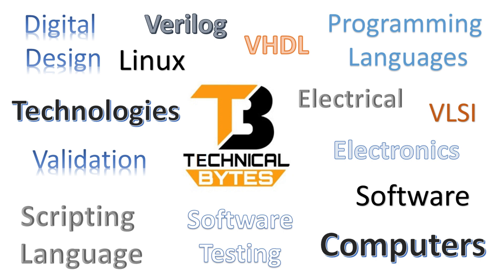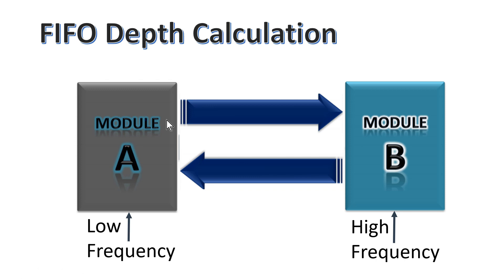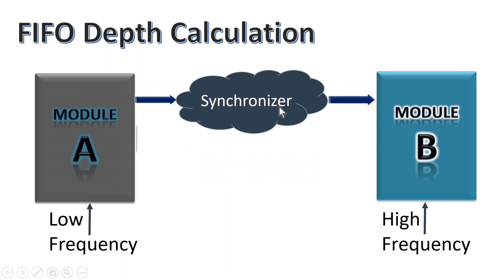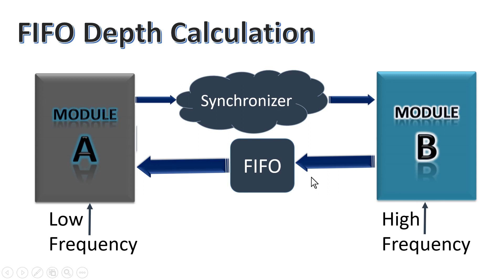Let us assume we have two modules: module A working at low frequency and module B working at comparatively high frequency. When module A sends data to module B, writing speed is very low and reading speed is very high, so no memory buffer is needed — a simple flip-flop-based synchronizer is enough. But when module B transmits data to module A, writing speed is very high and reading speed is very slow.